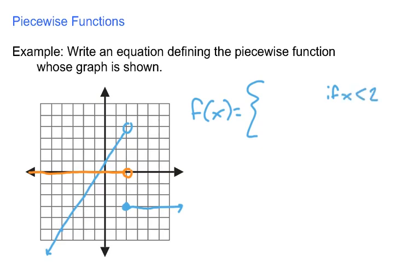The other piece is defined for all values of x beginning and including 2 and going on to infinity. So the second piece will be defined for values of x greater than or equal to 2.